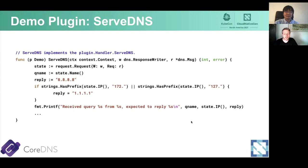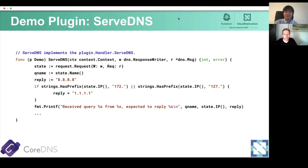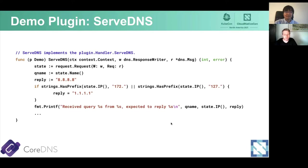The ServeDNS method is the meat of the plugin. It needs to check what the source IP is and then make a decision on what to return to the client. A state struct gives you some handy structures to use. In this case, we get the query name from the client question, which is used in the log printf. The default reply is 8.8.8.8, which is what we return to all clients, except if the client source IP starts with 172 or 127 — in that case we reply with 1.1.1.1. We then construct a DNS message, put that data in it, and write it back to the client. So depending on your source address, you'll get either 8.8.8.8 or 1.1.1.1.